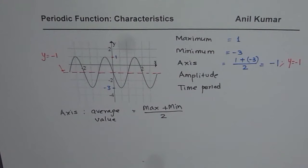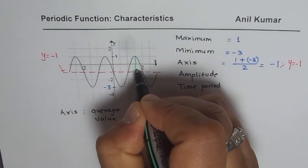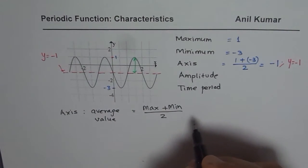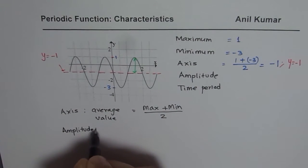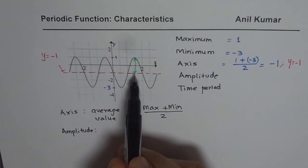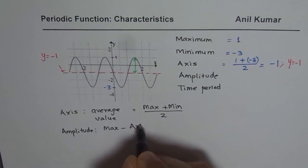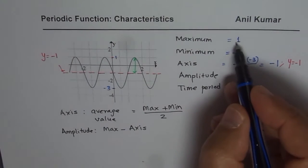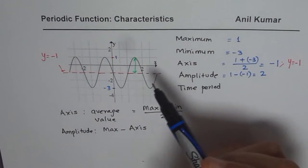Now let's look into amplitude. Amplitude tells us how far the maximum or the minimum is from the axis — it is the distance from the axis. One formula is: amplitude = maximum value − axis. In this case, that is 1 − (−1) = 2, so the amplitude is 2.